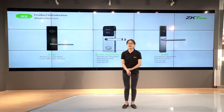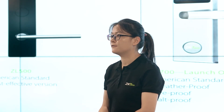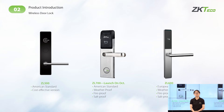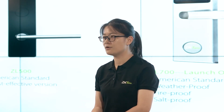First is the wireless door lock. We have released a universal economy model, the CL500, on the market. In the near future, we are going to release two more models: CL600 and CL700. These two types will help us cover more market segments, like European markets, higher-end markets such as four or even five-star hotels, as well as hotels near the beach, as these two locks are weatherproof, fireproof, and sunscreen-proof. We have applied better surface treatment and use better materials for these two types.